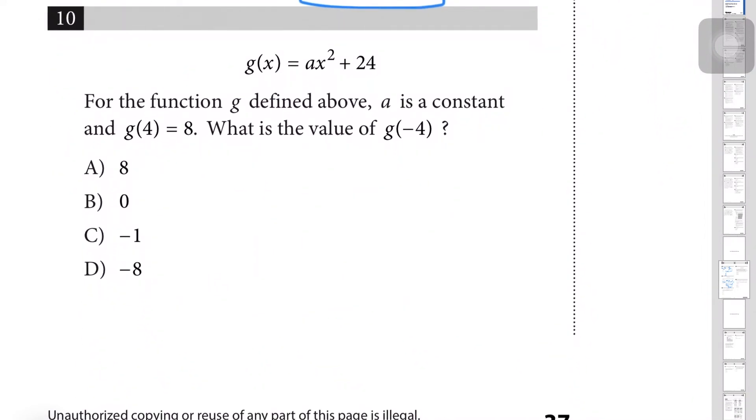Last question for this video: g(x) = ax² + 24. For the function g defined above, a is a constant and g(4) = 8. What is the value of g(-4)? For this question, whenever they give you something like this you just have to remember that it's technically a coordinate point, right? So whatever x value you input, this is the y value that is coming out. So this can technically be written as (4, 8).